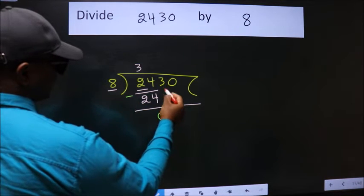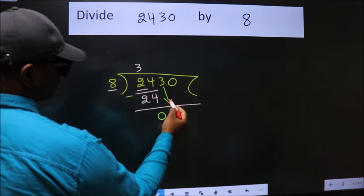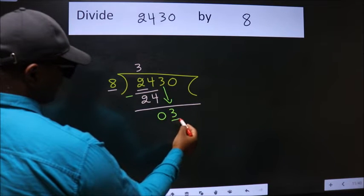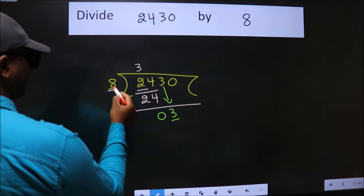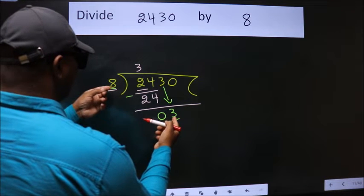After this, bring down the beside number. So, 3 down. Here we have 3. Here 8. 3 is smaller than 8.